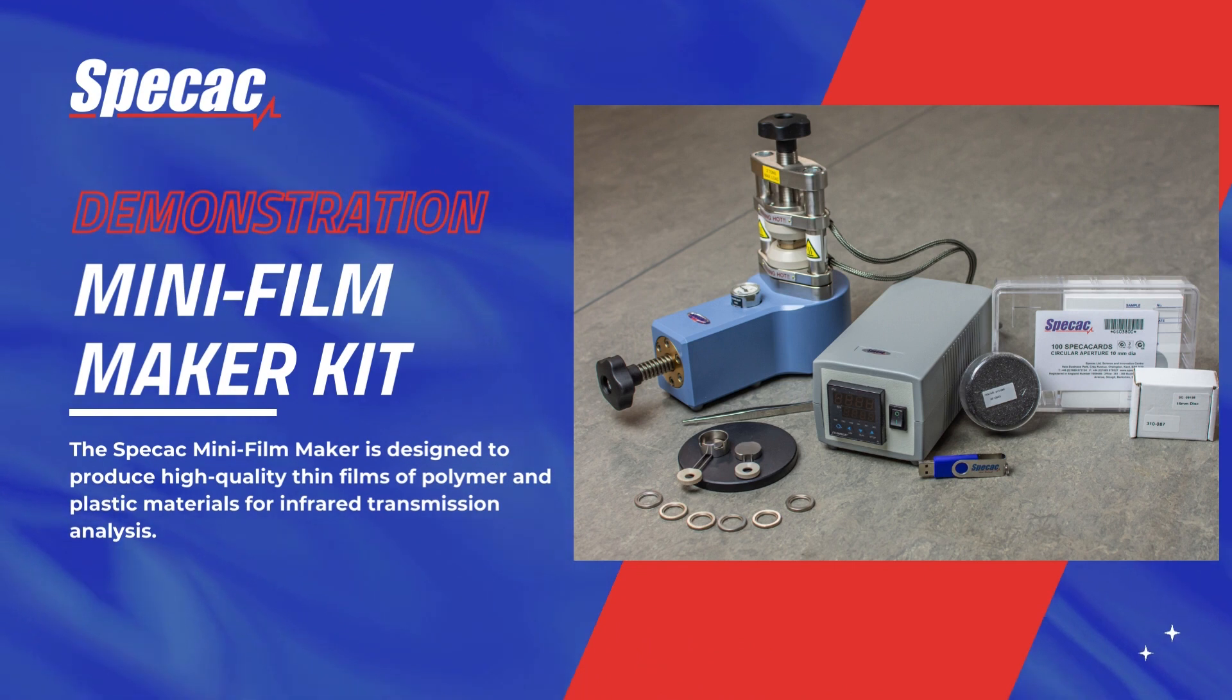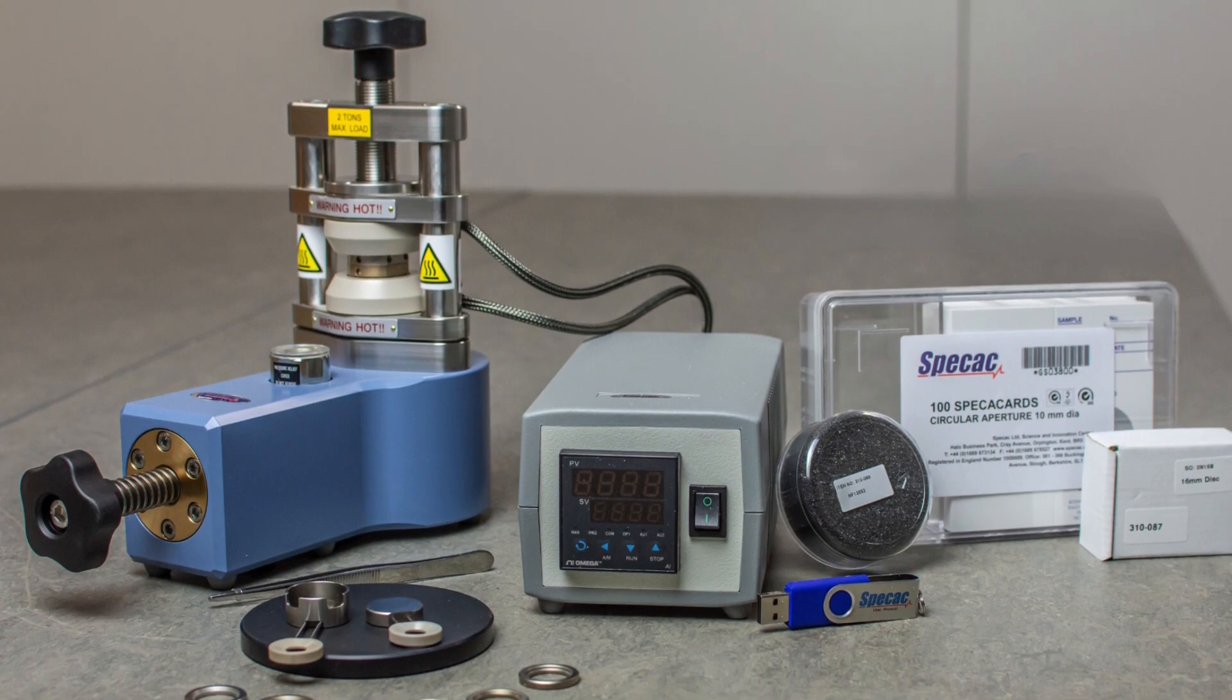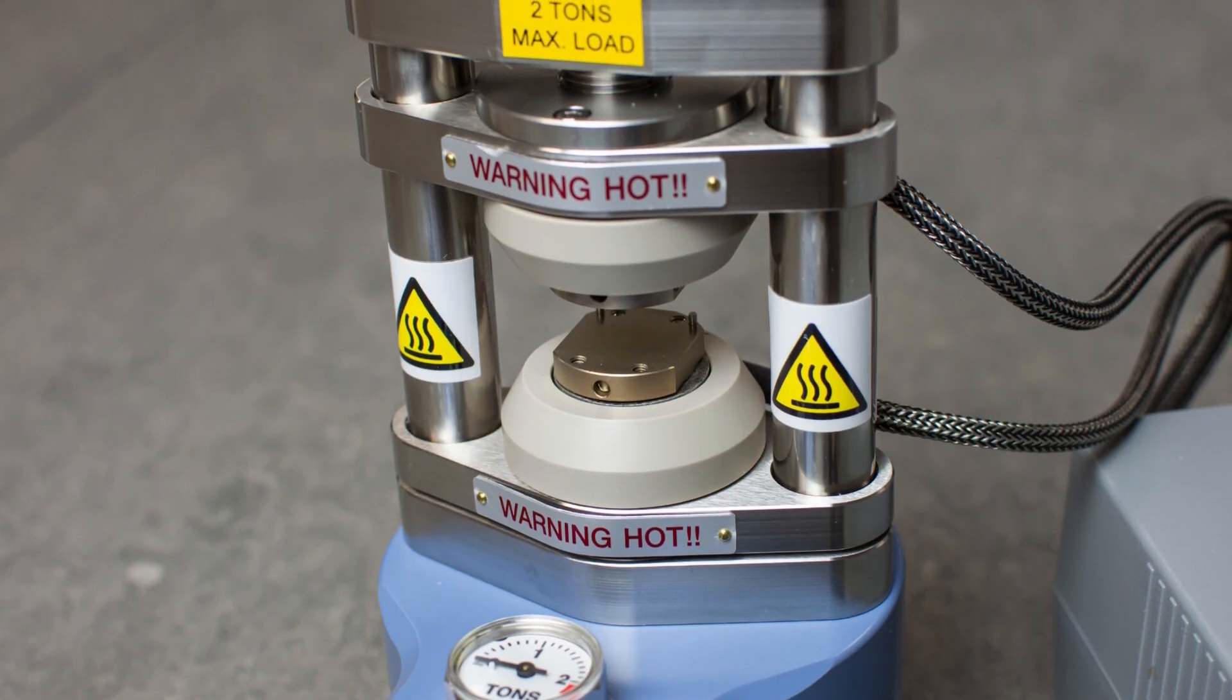The mini film maker kit is designed to produce thin films of plastic polymer materials for spectroscopy measurements quickly and easily. It consists of a mini press fitted with heated platens and a separate set of film making plates and sizing rings.